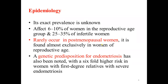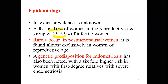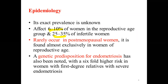Looking at the epidemiology, the exact prevalence is not known, but it mostly affects women in the reproductive age — approximately 6 to 10 percent of women. It can account for 25 to 30 percent of infertility in women. This condition is very prevalent globally and locally, and it is very common in the reproductive age group because it is an estrogen-dependent inflammatory condition.